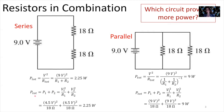We can also find total power by summing the power dissipated by each resistor. Since these are in series and have equal resistance, each 18-ohm resistor has 4.5 volts across it — 4.5 plus 4.5 equals 9 volts. The power for each is V² over R: 4.5² over 18 ohms plus 4.5² over 18 ohms, which also gives approximately 2.25 watts total for this series circuit.